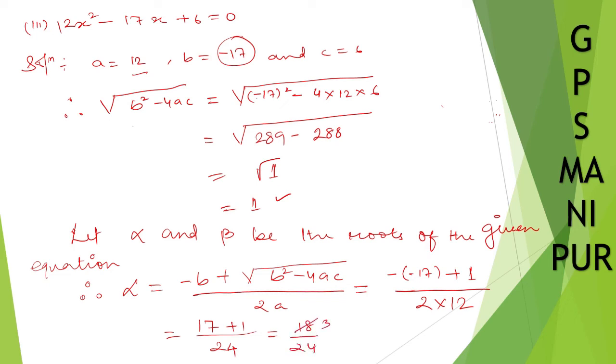So 2 into 12 which will be equal to minus into minus is plus. So 17 + 1 divided by 24. 17 + 1 is 18/24. So I can cancel: 6 × 3 is 18, 6 × 4 is 24. So it is 3/4.